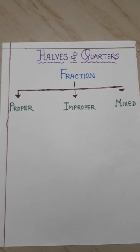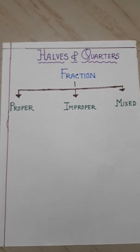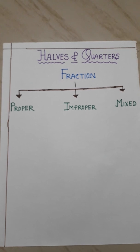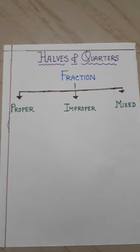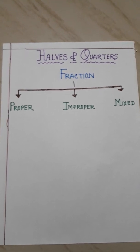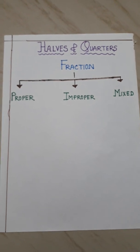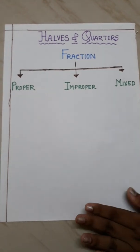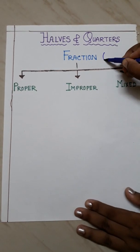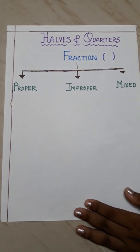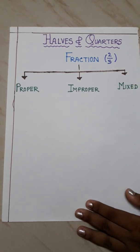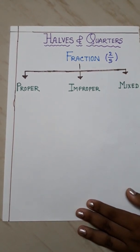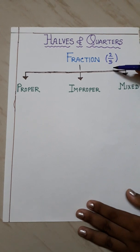Before starting the chapter we should know what is a fraction, or what is a fractional number, or how it looks like. A fractional number consists of two numbers. One will come at the top and another one will come at the below. Suppose I am writing a fractional number here — 2 by 5. This is a fraction or fractional number.